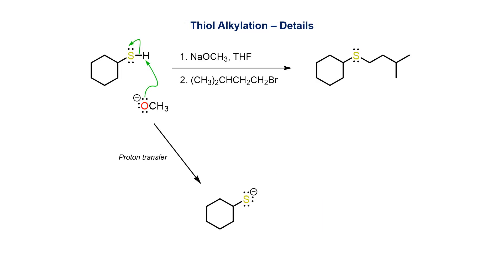Dissolving the thiol in a polar aprotic solvent, such as THF, allows for deprotonation at sulfur with a strong base such as sodium methoxide. Due to the acidity constant difference — 10 for the thiol and 16 for the alcohol conjugate acid — the equilibrium will completely favor the thiolate anion.